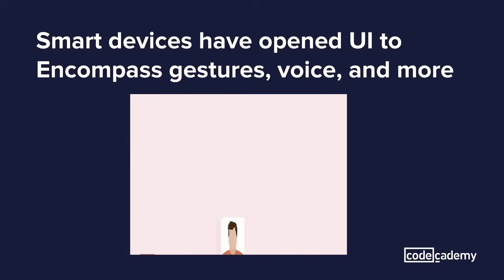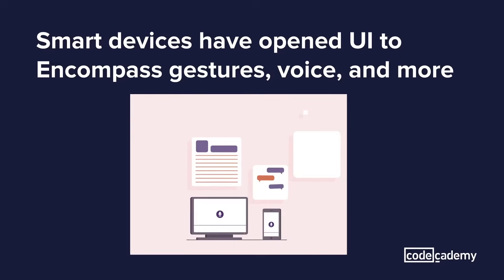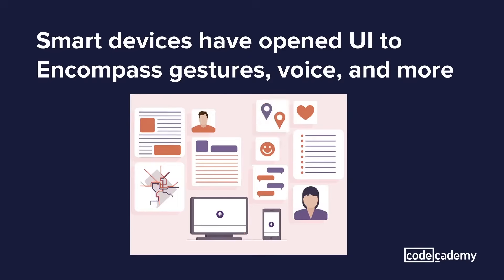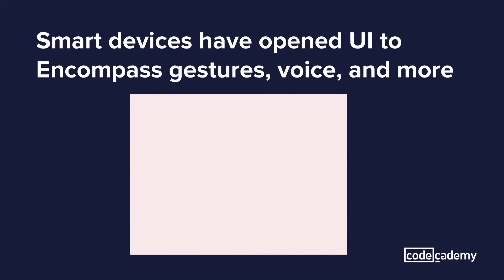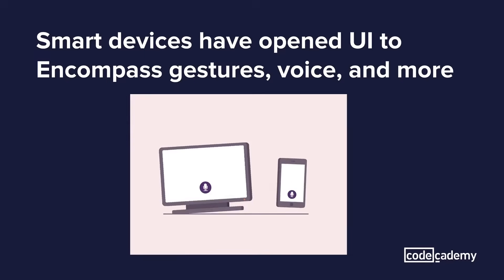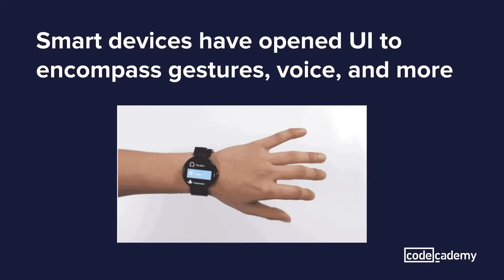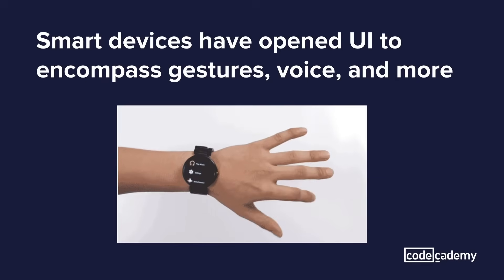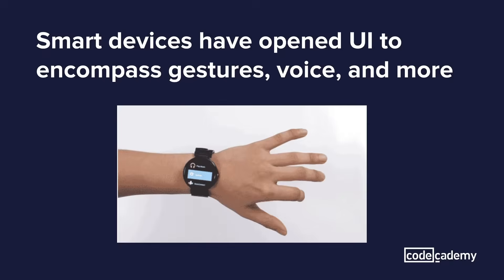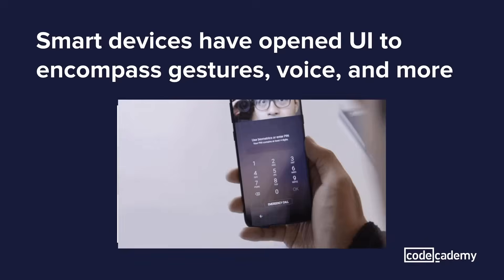Now with newer smart tech, user interfaces have expanded our interactions beyond a click and a swipe. It's opened the UI horizons to allow a user's gestures and voice to interact with the device. Like if you want to interact with your smartwatch, you can just change your hand orientation. Or to unlock your phone, you just need to look at it.